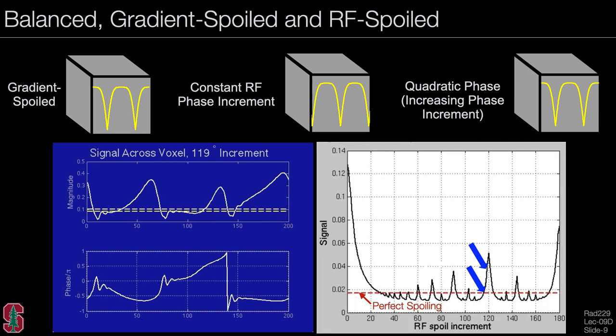A classic plot shows signal as a function of different RF spoiling increments. The dashed red line shows what you get with perfect spoiling. At 117 degrees, the signal agrees very closely with perfect spoiling, but 119 degrees does not. This is how we choose this angle, and these spoiling increments are often empirically chosen to match T1 contrast over a range of flip angles.